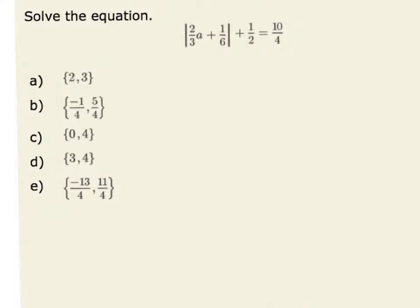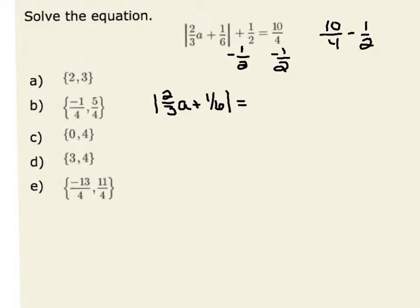One way to approach this problem is to isolate the absolute value on one side of the equation. Therefore, I'm going to start by subtracting 1 half from both sides, so I am left with the absolute value of 2 thirds times a plus 1 sixth equal to 10 fourths minus 1 half. That is 10 fourths minus 2 fourths, which equals 8 fourths, or 2. Therefore, the absolute value of 2 thirds times a plus 1 sixth is equal to 2.